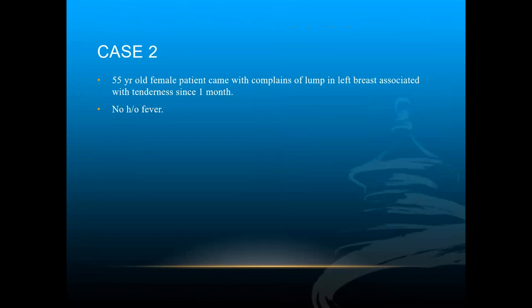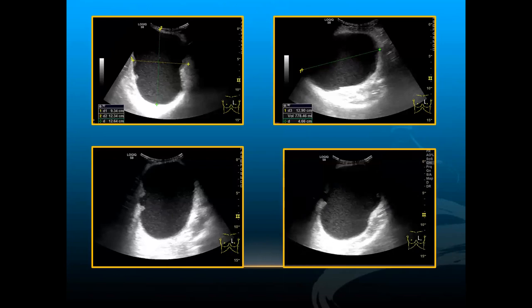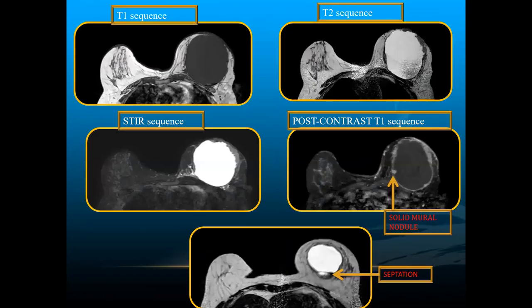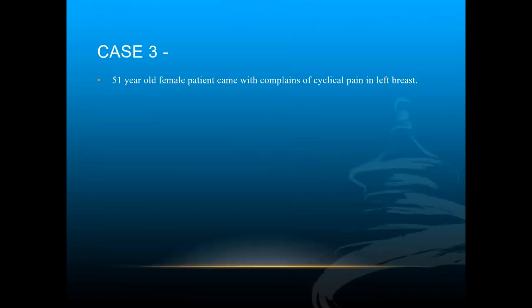Case 2: A 55-year-old female presenting with a lump in the left breast with tenderness for one month, no fever. Mammography showed a large high-density lesion in the left breast parenchyma with normal right breast. On MRI, a well-defined large lesion was noted in the left breast parenchyma — hypointense on T1, hyperintense on T2 and STIR — showing peripheral post-contrast enhancement with solid intramural components and septations. This was consistent with a phyllodes tumor.